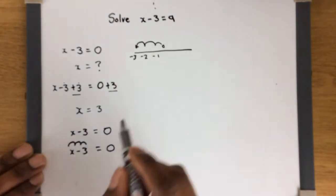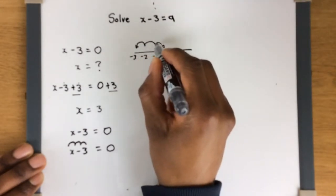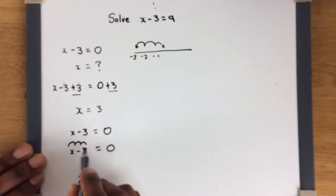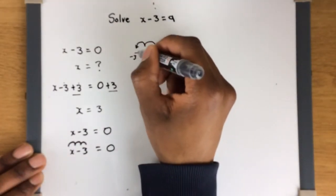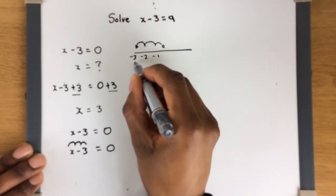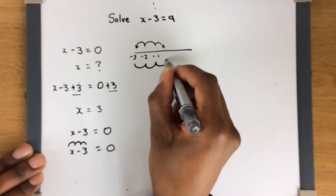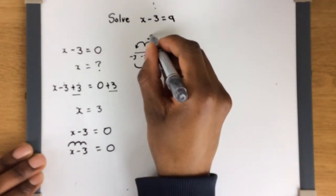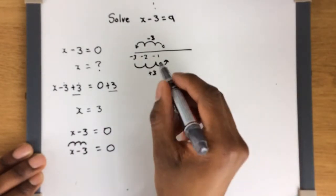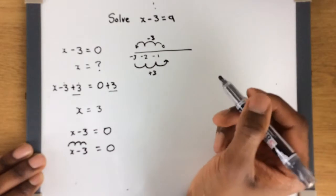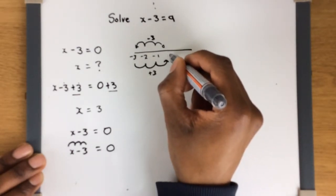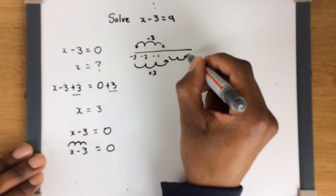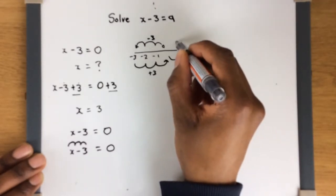So if we want to get x with nothing on it, we need to jump 3 steps forward. Minus 3 means you've jumped 3 steps backwards, so to get rid of minus 3 we simply jump forward by 3 steps. Starting at minus 3 and doing plus 3 — jumping 1, 2, 3 — brings us back to 0. Similarly, plus 2 would mean starting at 0 and jumping forward 2 steps, ending up at 2.